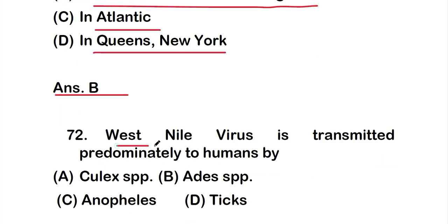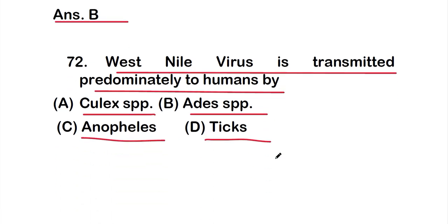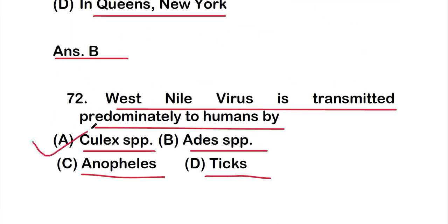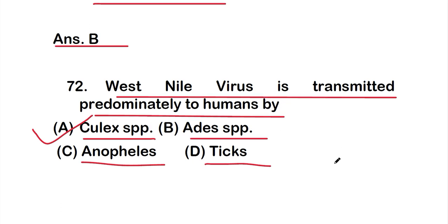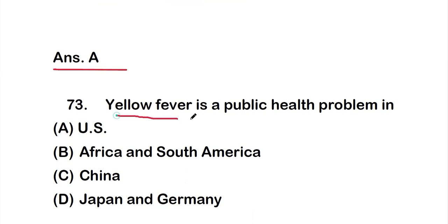Question number 72: West Nile virus is transmitted predominantly to humans by — option A: Culex species, option B: Aedes species, option C: Anopheles, or option D: ticks. The correct answer is option A — West Nile virus is transmitted predominantly to humans by Culex species of mosquitoes.